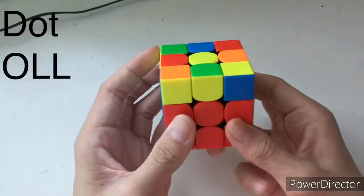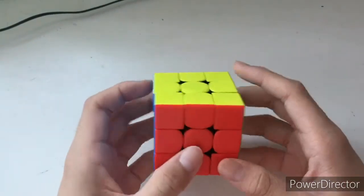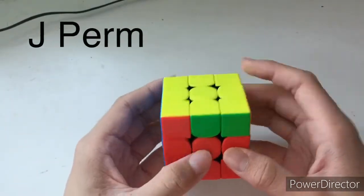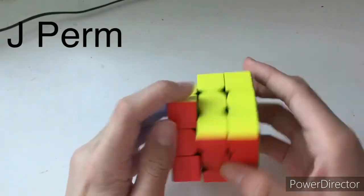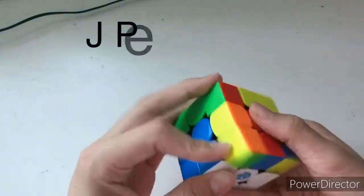You should only use one hand for most of the OLLs, like the dot OLL. And for this JB perm, you will use the right hand to do it. But for this JA perm, you should use also the right hand.